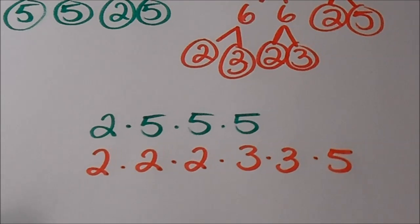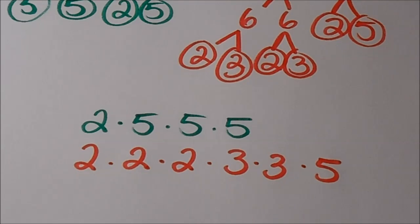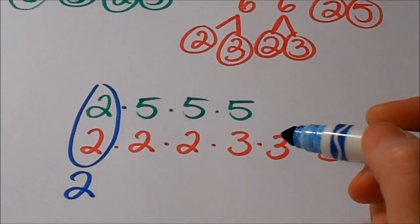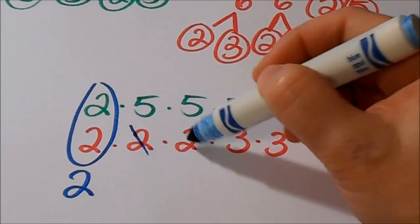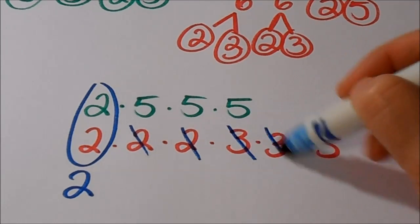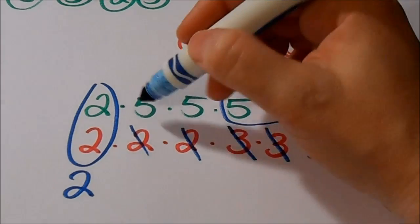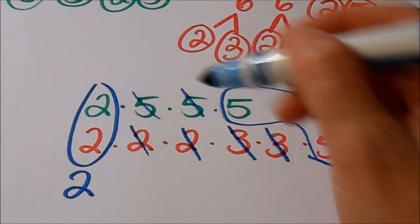Now I need to find my common factors — in other words, what numbers are the same in both of these prime factorizations. I can see that they share a 2, so I'm going to write a 2 down. 250 doesn't have any more 2s, so I can't use those extra ones, and it doesn't have any 3s either. But it does have a 5 in common, though I can't use the other 5s because there's no matching 5 in 360 for those.